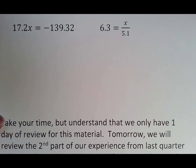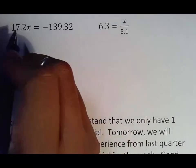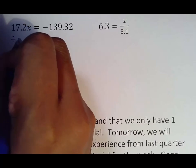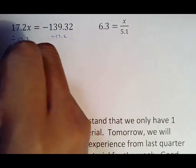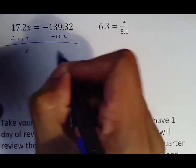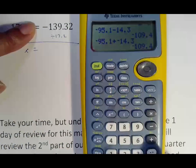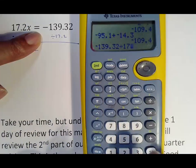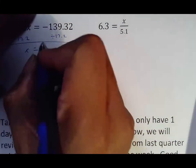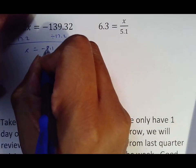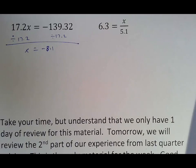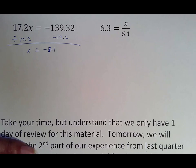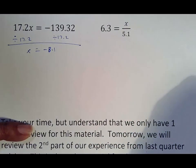If you had 17.2X equals negative 139.32, the number with X is 17.2. They're being multiplied because they're directly attached. So we divide by 17.2. X comes down because those two things go away. And all you have to do is type in negative 139.32 divided by 17.2 to get the answer of negative 8.1. You might not like how the numbers look, but for the most part, as long as you know how to use your calculator, you should be okay. And we have been working on that in class. So hopefully you've been doing the same thing on your own.